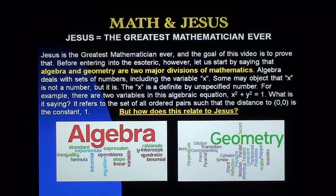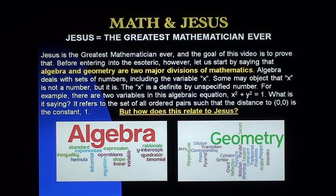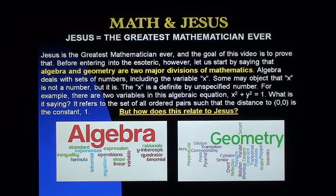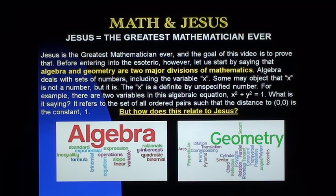Before entering into the esoteric, or more complicated, let us start by saying that algebra and geometry are two major divisions of mathematics. Algebra deals with sets of numbers, including the variable x. The x in algebra is a definite but unspecified number. For example, there are two variables in this algebraic expression: x squared plus y squared equals 1. It refers to the set of all ordered pairs x and y such that the distance to the origin (0, 0) is the constant 1.